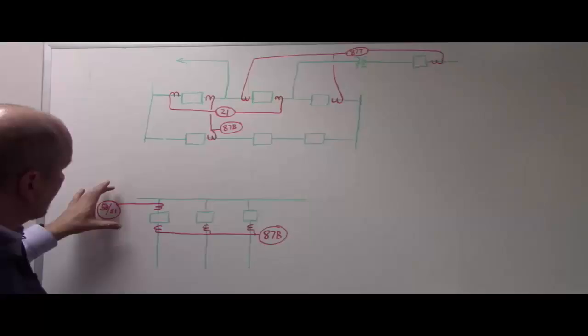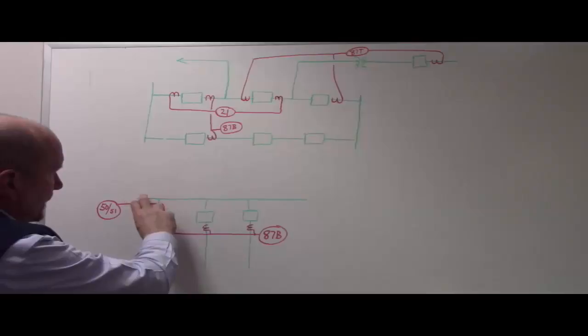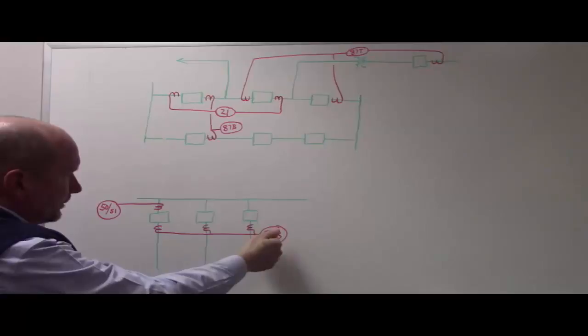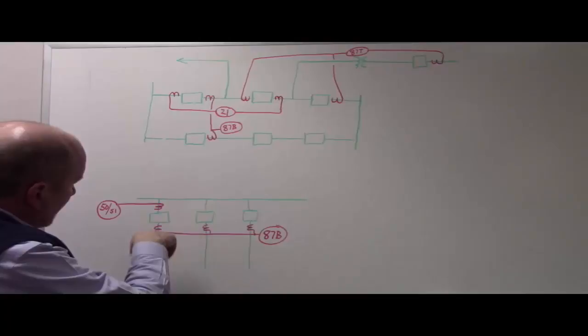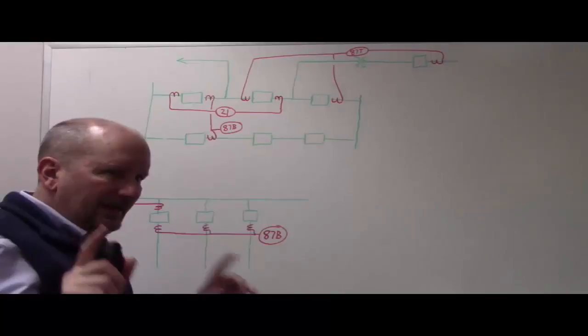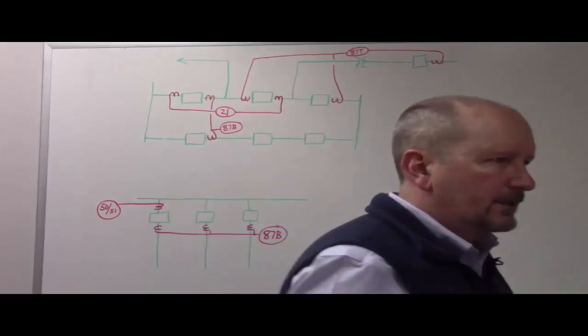In a different configuration — a radial bus scheme — to protect the main bus we put CTs on the far side of each circuit breaker and run them to a bus differential relay. For each one of these breakers, the zone looking outward uses a simple overcurrent relay, a 50/51. If there are any questions on this, it's really important that you get this straight — it is very fundamental to substations.